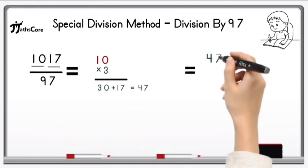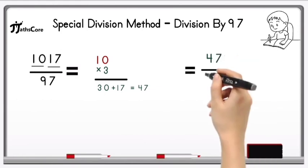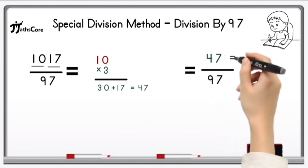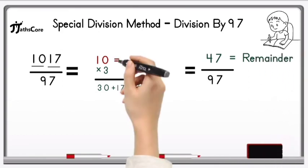Now divide this 47 by 97. But it is not possible because 47 is less than 97. So 47 is the remainder and 10 is the quotient here.